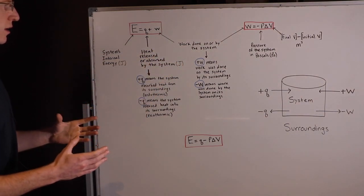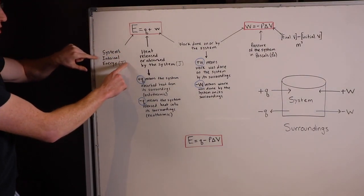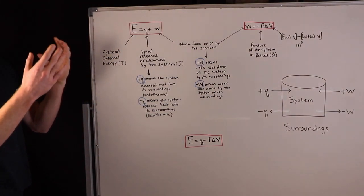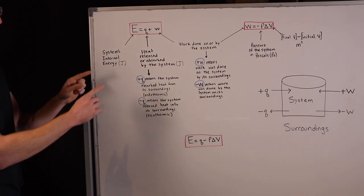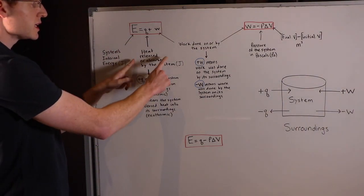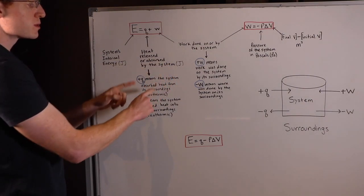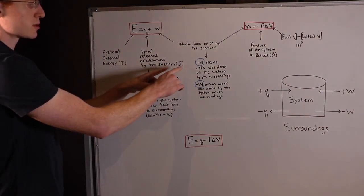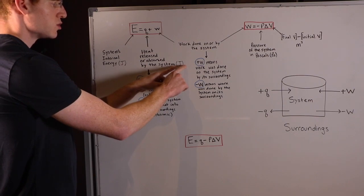So let's break this down. E is the system's internal energy. It's just the energy stored inside of what we define as a system, and it's usually measured in joules. Q is the heat released or absorbed by the system, and this is also represented usually in units of joules.